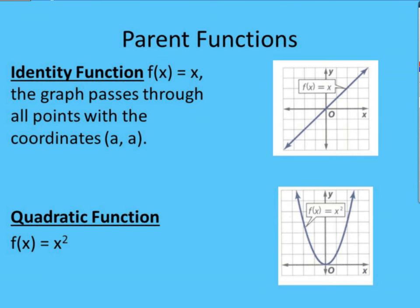The identity function is a function of the form f(x) equals x. This is going to be a line that goes through the origin at (0,0) and has a slope of 1.